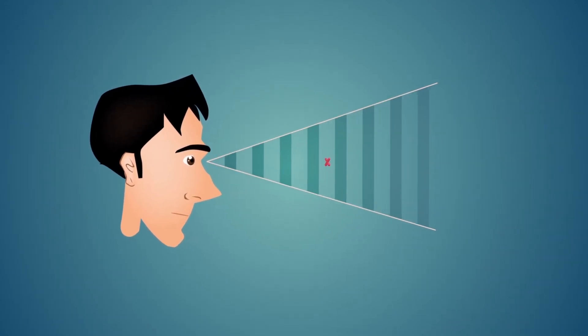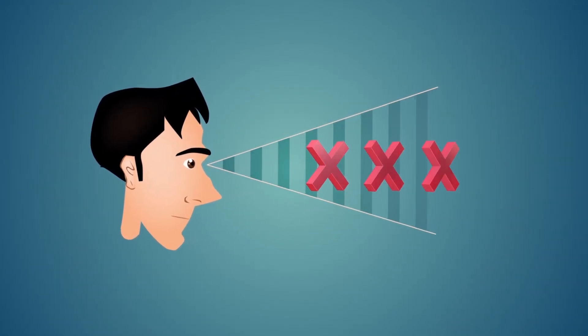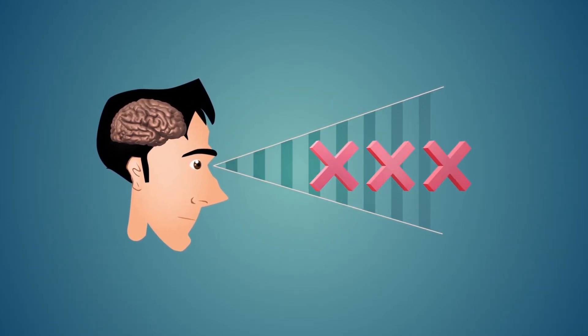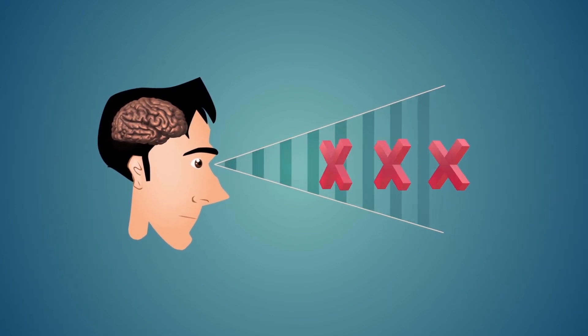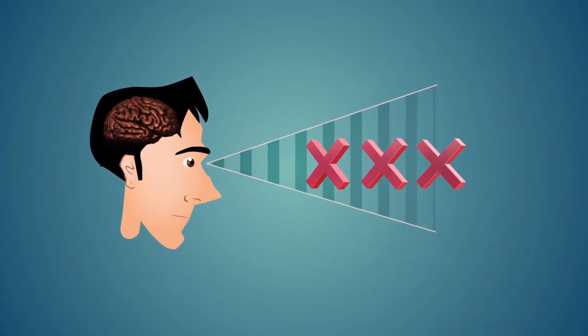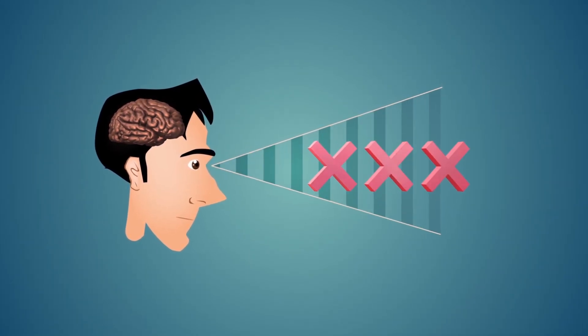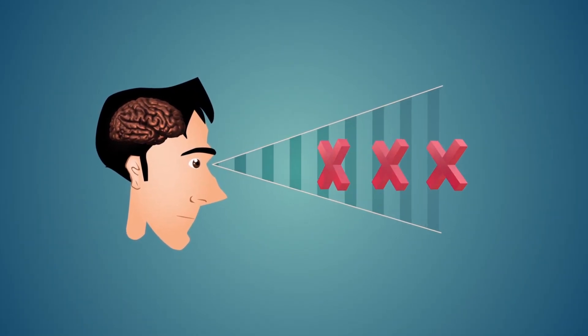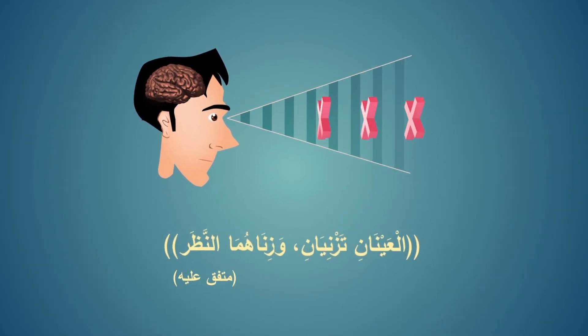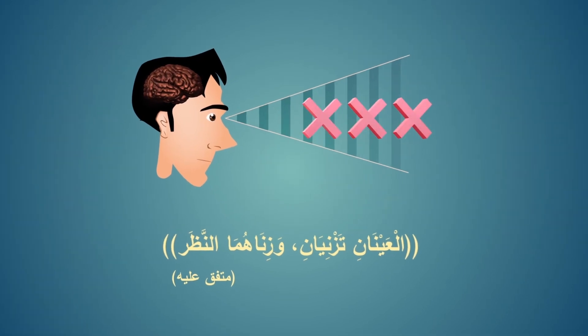عصبونات المحاكاة كذلك تفسر ما يستشعره من يُطلق لعينيه العنان ويشاهد مواد إباحية — فهي ليست مجرد رؤية، بل تنشط مراكز الجنس في الدماغ كأن المشاهد يمارس الفعل فعلاً بمجرد النظر. وصدق الرسول الكريم الذي قال قبل أكثر من أربعة عشر قرناً في حديث متفق عليه: 'العينان تزنيان وزناهما النظر'.